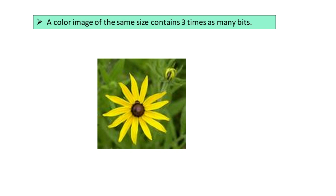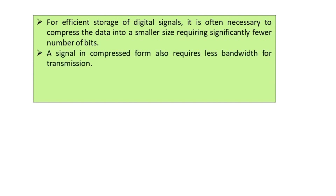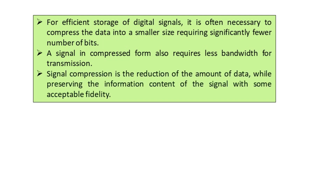Good efficiency is required for storage of digital signals of this kind, and it is often necessary to have compression of the data to save memory. Compression reduces data to a smaller size requiring significantly fewer bits. A signal in compressed form also requires less bandwidth for transmission. In short, signal compression is the reduction of the amount of data while preserving the information content of the signal with some acceptable fidelity. When we store information with minimal bits and want to reconstruct the original representation, we should be able to do so from the coded or stored form.